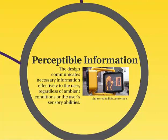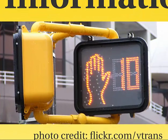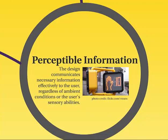Next: perceptible information. The next time you are crossing the street, you will hear that voice counting down the seconds you have left to cross. Not only are you seeing the picture of the hand and the digital display of numbers counting down, but you also hear — and this is important for the visually impaired — the verbal countdown informing the pedestrian how much time is left to cross. That uses the senses of hearing and vision. The design communicates necessary information effectively to the user, regardless of ambient conditions or the user's sensory abilities.